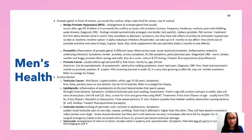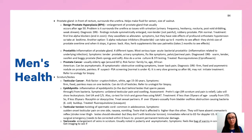Prostatitis is inflammation of the prostate gland. Symptoms include a tender, boggy prostate — think spongy, soft, or swollen. Do a urine culture and STD testing; treat with antibiotics. Prostate cancer is more common in older patients — risk factors include age, family history, and African American race. It may be asymptomatic but can present with urinary symptoms and lower back pain. DRE will reveal fixed, hard, asymmetric nodules. Screen with PSA — refer to urology.